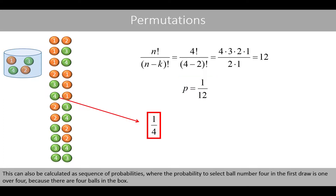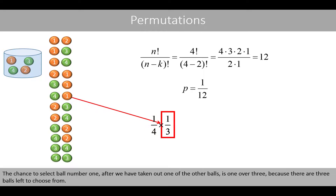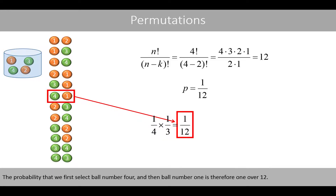This can also be calculated as a sequence of probabilities: the probability to select ball number 4 in the first draw is 1 over 4, because there are 4 balls in the box. The chance to select ball number 1 after we have taken out one of the other balls is 1 over 3, because there are 3 balls left to choose from. The probability that we first select ball number 4 and then ball number 1 is therefore 1 over 12.